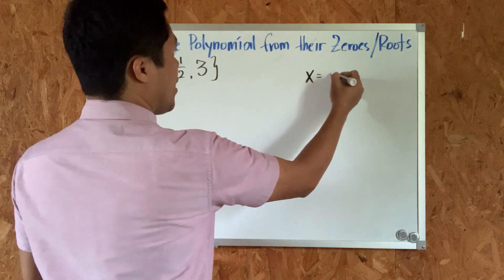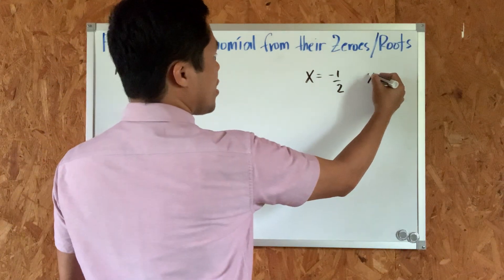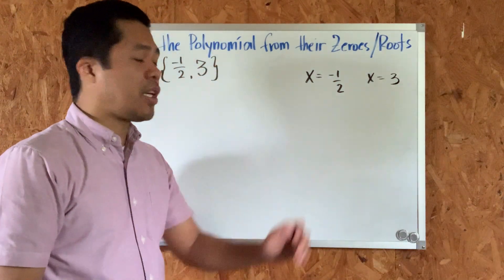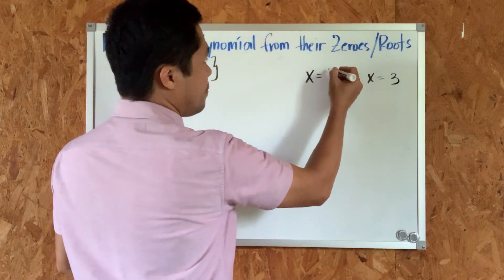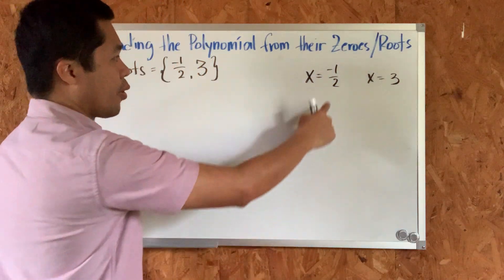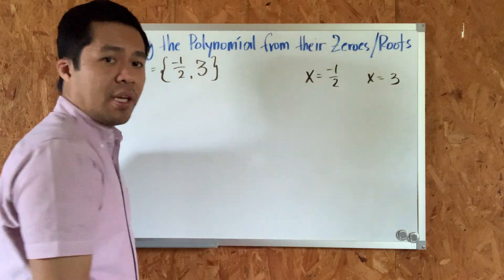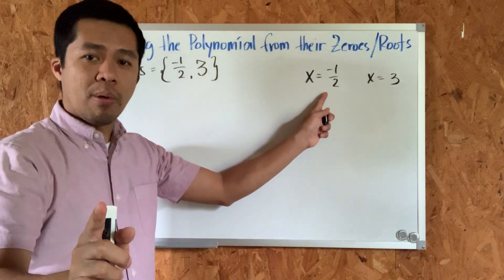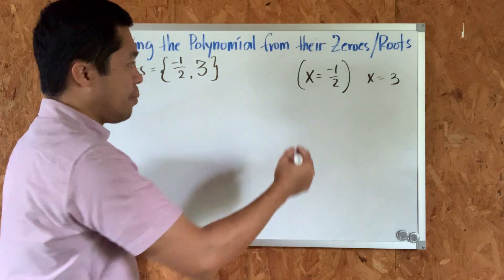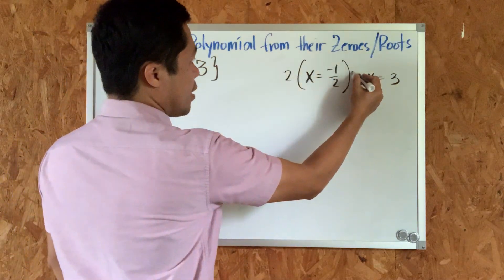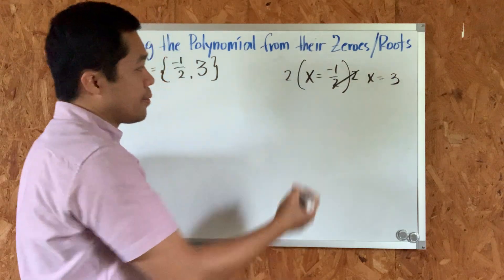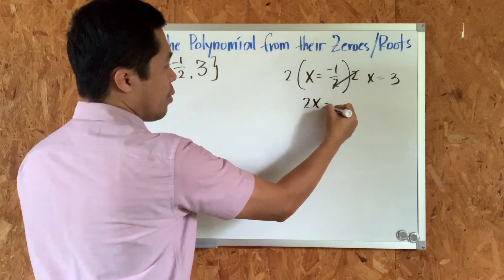The first root is negative one half and the second root is three, so x equals negative one half and x equals positive three. Let's deal first with the fraction. To convert this into a binomial, if it is a fraction, the first thing we do is multiply the equation by the denominator. Here the denominator is two, so we multiply both sides by two. Negative one half times two cancels out, and two times x gives us two x equals negative one.